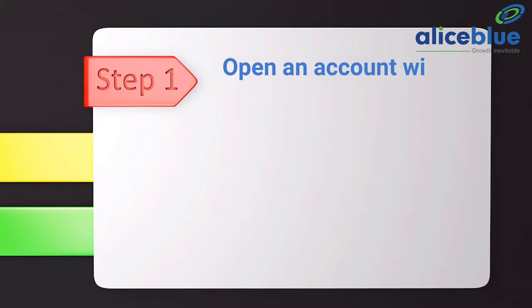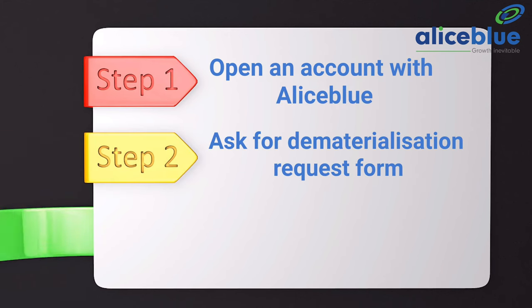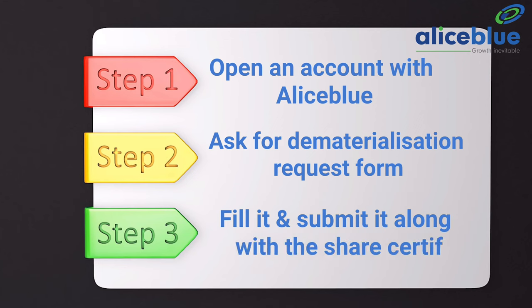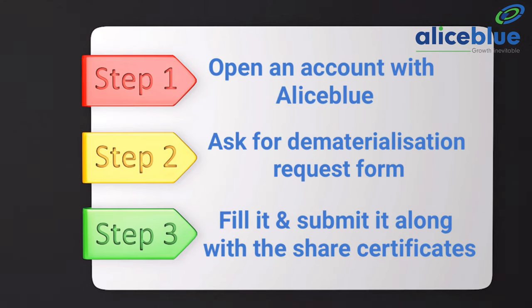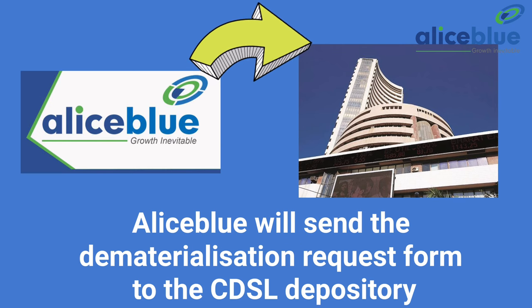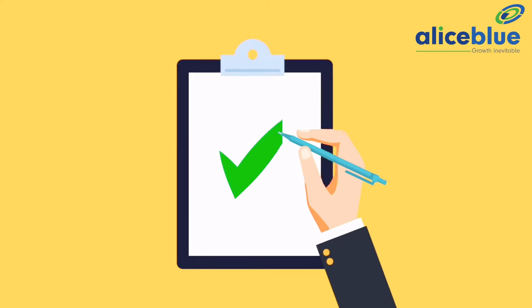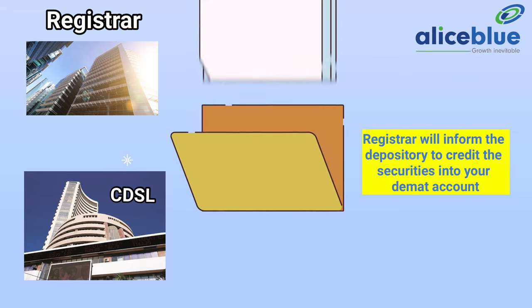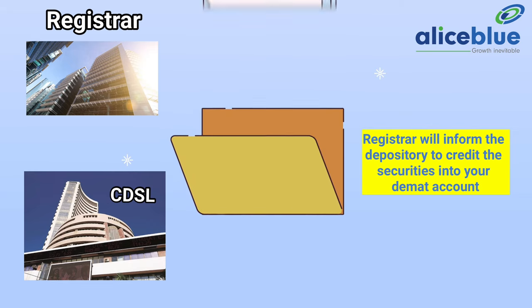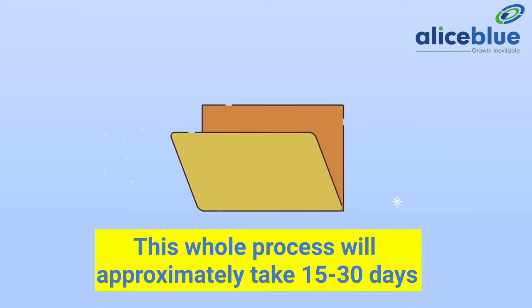If you have physical shares and want to dematerialize them, follow these simple steps. First, open an account with Alice Blue. Ask for the dematerialization request form, fill it, and submit it along with the share certificates. Alice Blue will send the dematerialization request form to the CDSL, which is the depository, and submit the share certificates to the registrar of the issuer company. The registrar will validate the certificates, and once approved, inform the depository to credit the securities in your DMAT account. This whole process takes approximately 15 to 30 days.